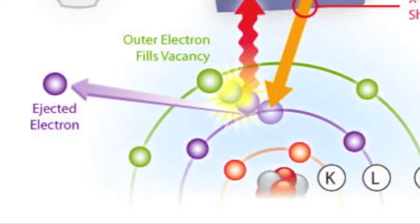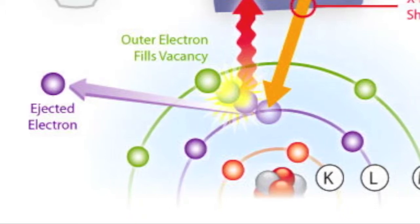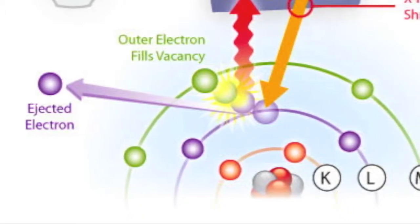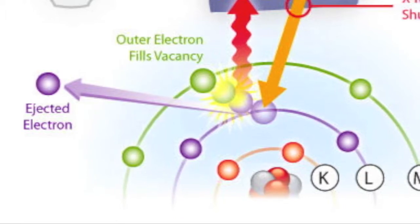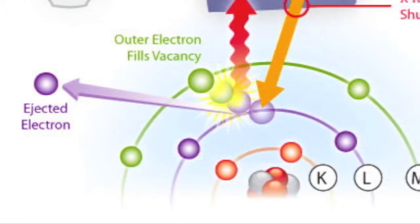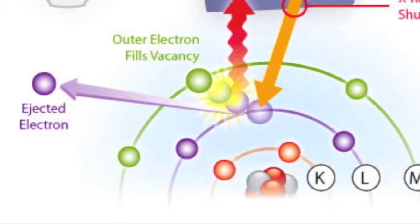Like knocking Mercury out of orbit. And nature says no, no, there's supposed to be something there, so it takes an electron from a higher orbit and makes it drop down into the lower orbit. And everybody sort of moves forward in line.